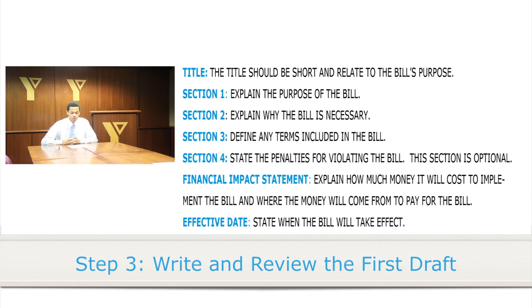Financial Impact Statement: In this section, you need to explain how much it will cost to implement your bill and where the money will come from. You may find it helpful to review the District of Columbia's budget in order to complete this section. Effective Date: Finally, in this section, you must state when your bill will take effect. You may decide that you want your bill to take place immediately after passage, or you may want to implement your bill at a later date — that is up to you.